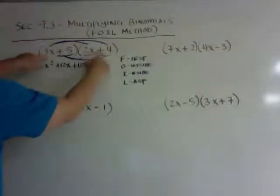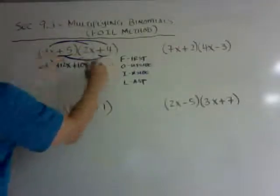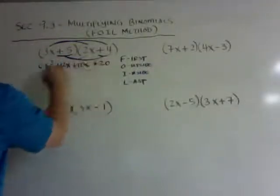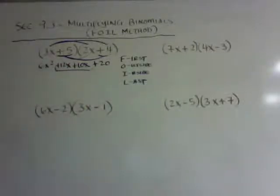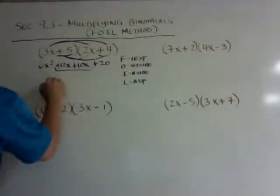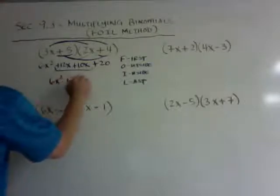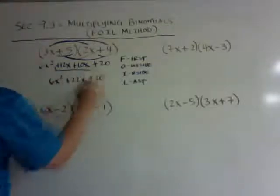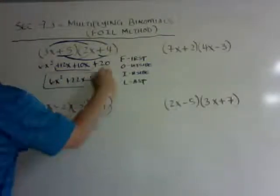So first, outside, inside, last, and I get plus 20. And you can see here, I have like terms, so I need to combine the middle. So I get 6x squared plus 22x plus 20, and there's my answer.